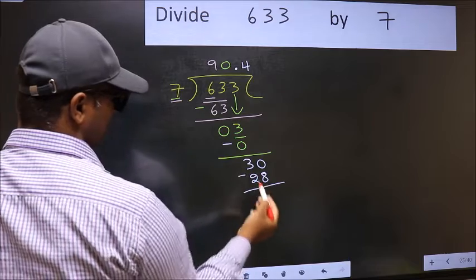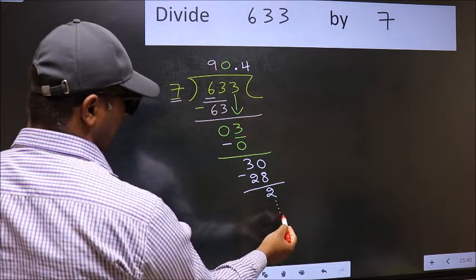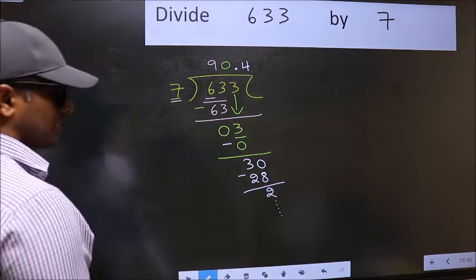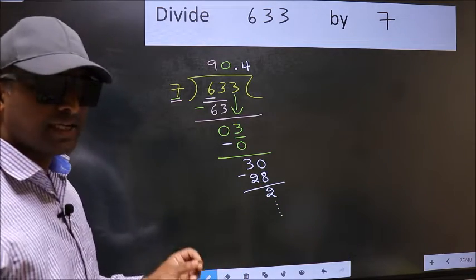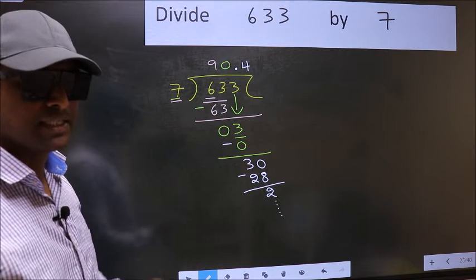A number close to 30 in 7 table is 7 fours 28. Now you should subtract. 30 minus 28, 2. And continue the division. I am not doing that. Did you understand where the mistake happens? You should not do that mistake.